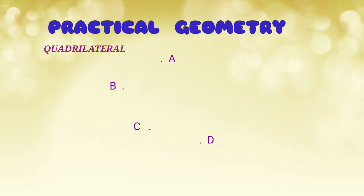If we mark four different points on a sheet of paper and join them to form a closed figure, the figure which we obtain is called a quadrilateral. It has four sides and four angles.